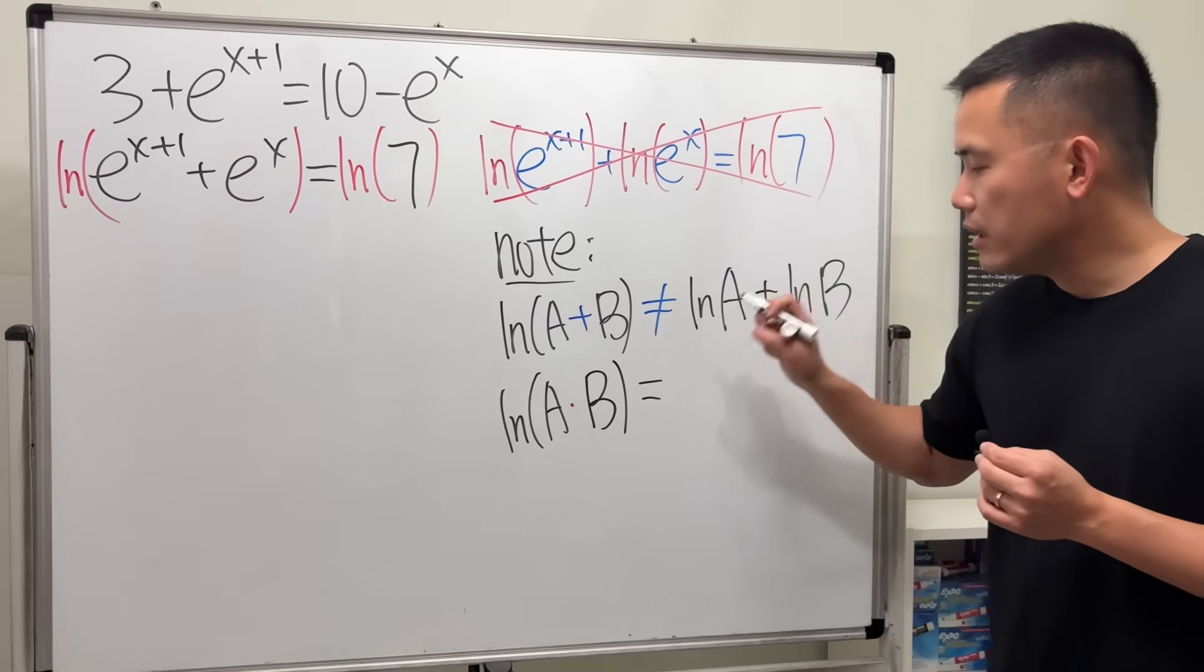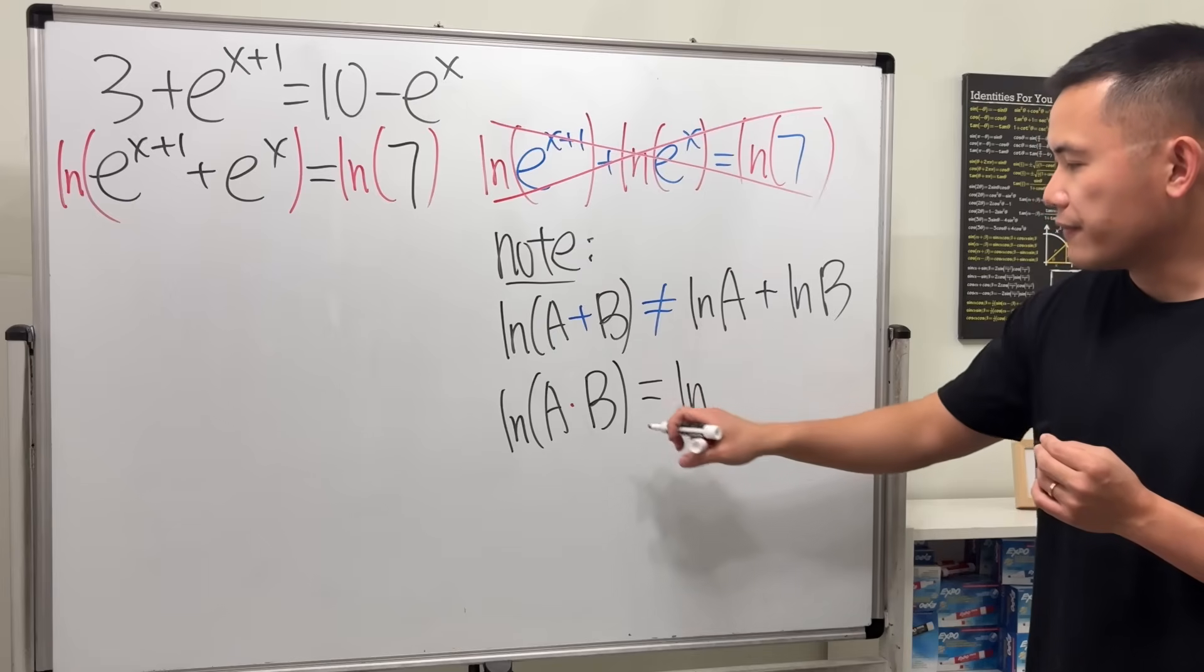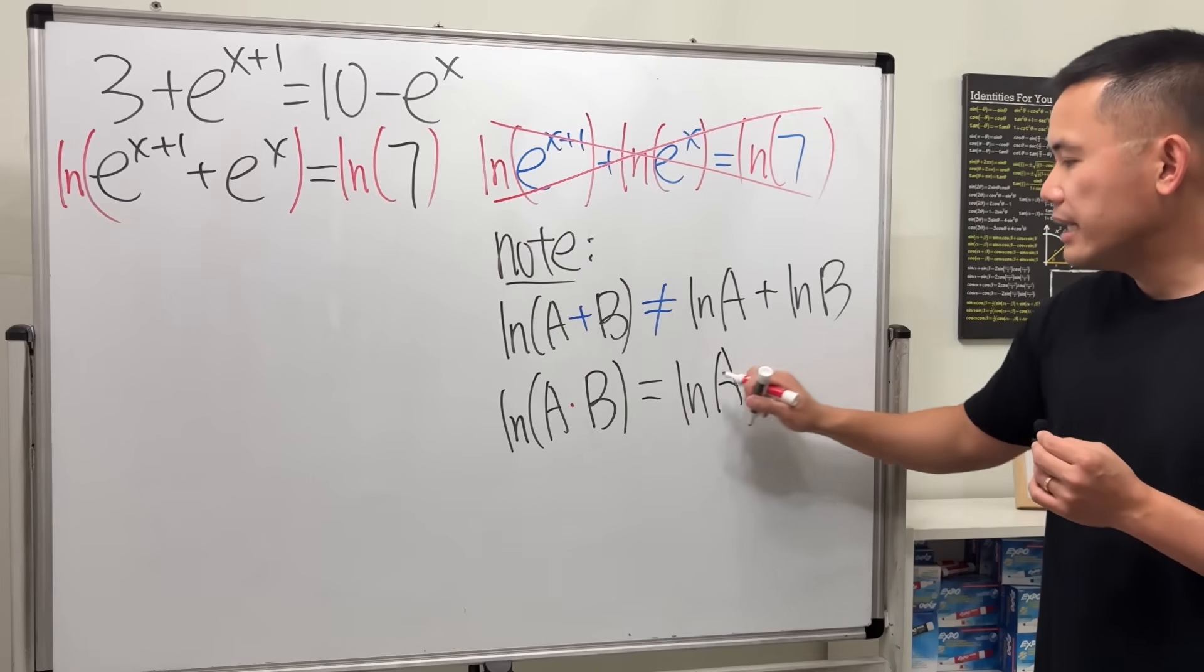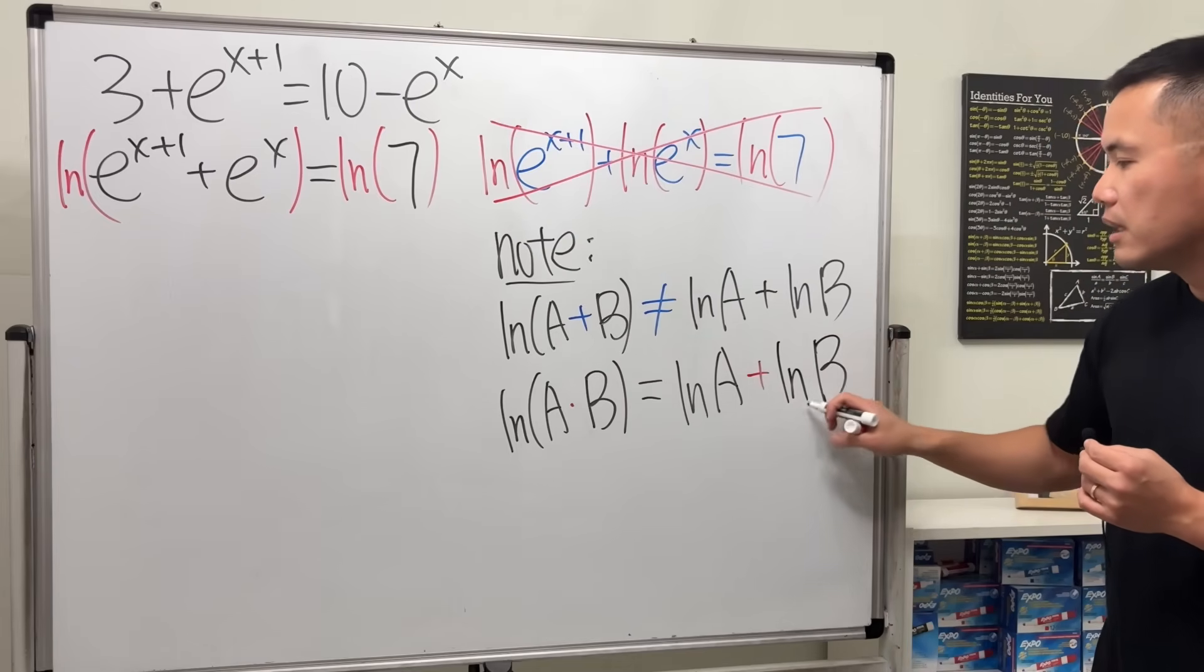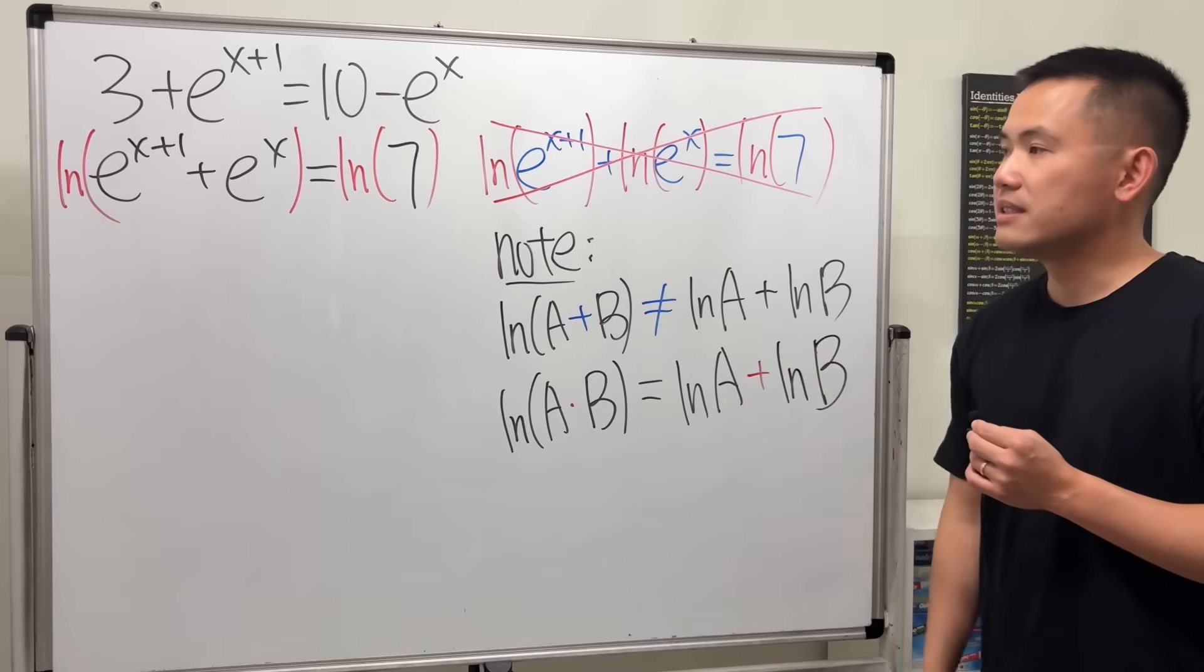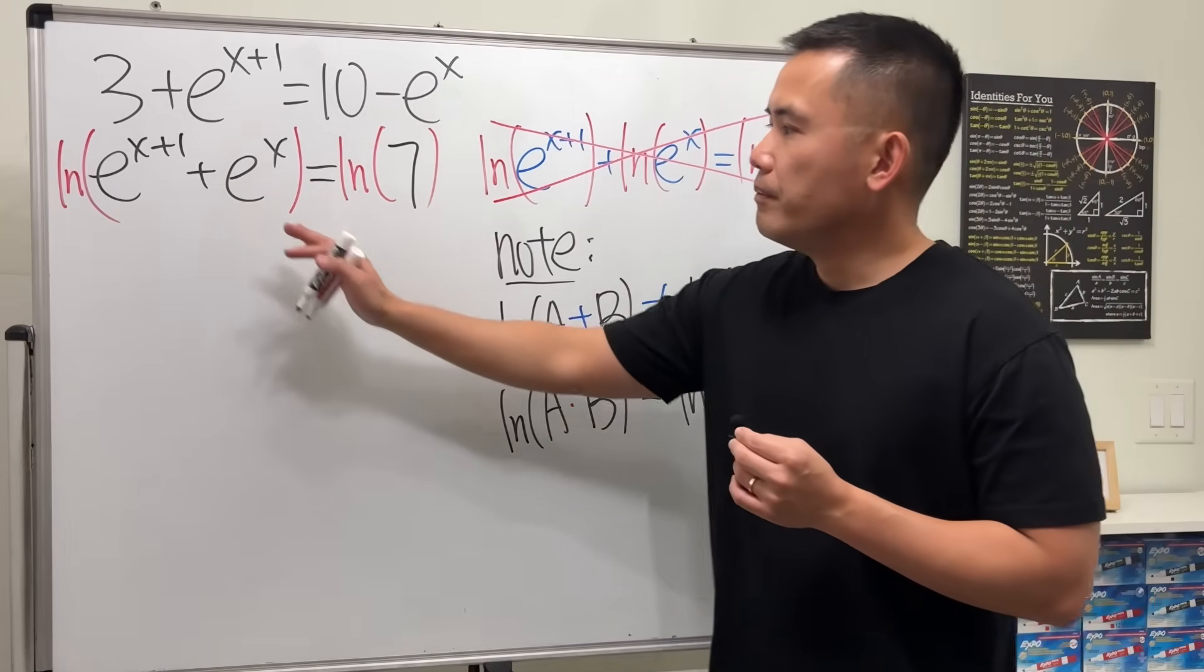When we have ln(a × b), this right here is equal to ln of the first, which is a, and then the multiplication will give you the plus right here, and then we have ln(b). This is correct, not this.